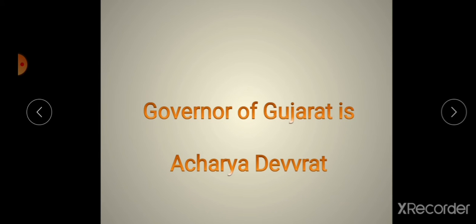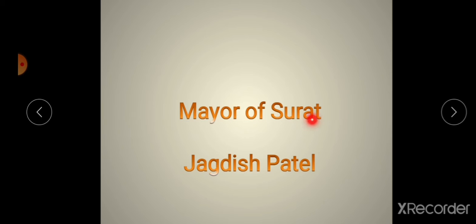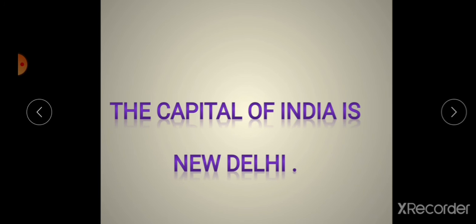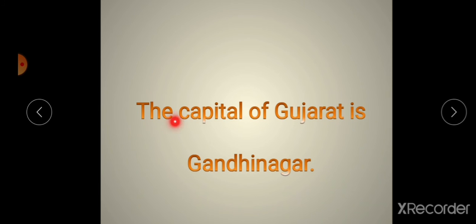Governor of Gujarat is Acharya Devvrat. Kaun hai Governor Gujarat ka? Acharya Devvrat. Mayor of Surat is Jagdish Patel. The capital of India is New Delhi — New Delhi raajdhani hai. The capital of Gujarat is Gandhinagar.